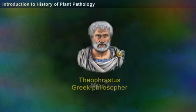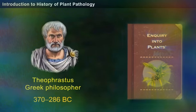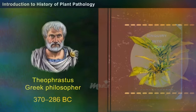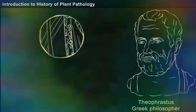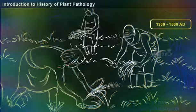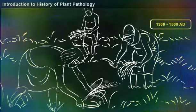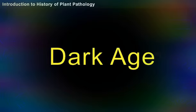The Greek philosopher Theophrastus, who lived between 370 and 286 BC, wrote a book named Inquiry into Plants, in which he shared his experiences with some plant diseases. He is regarded as the father of botany. After Theophrastus, until the Renaissance, between 1300 and 1500 AD, there was no significant record of intellectual activity — a period called the Dark Age in the history of plant pathology.